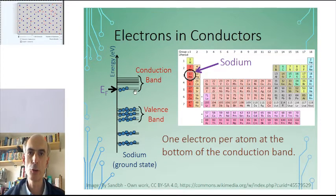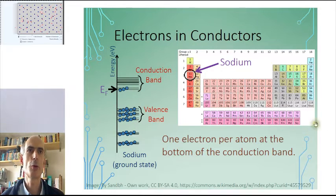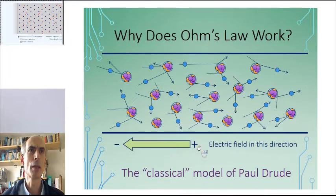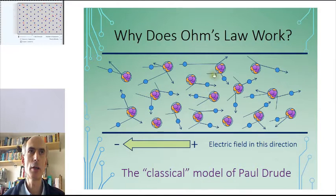The model that we'll be using, which was first proposed by Paul Drude, is that these electrons move throughout this lattice a bit like little balls in a pinball machine, bouncing off the fixed nuclei which remain stationary in the lattice.